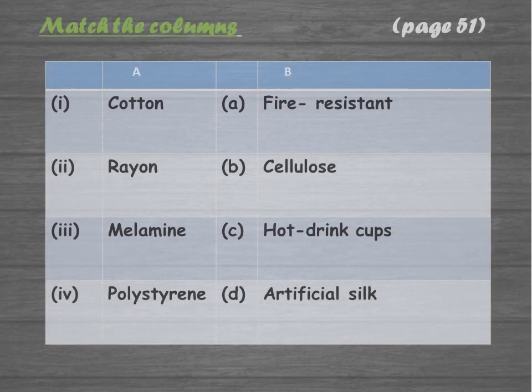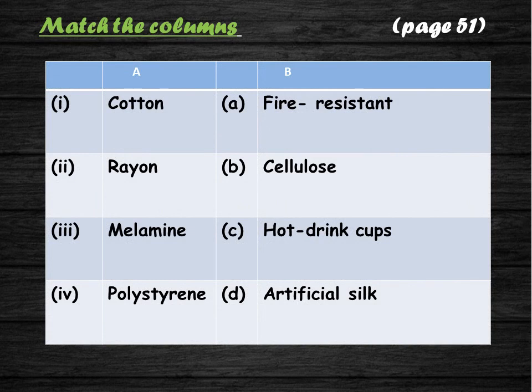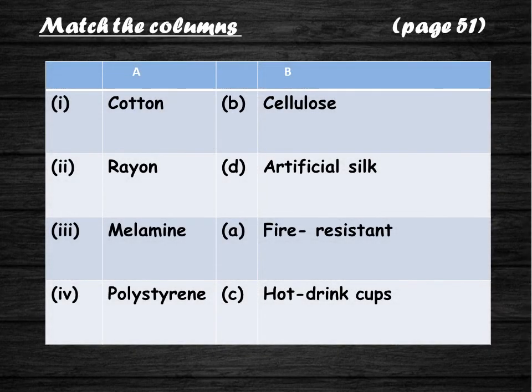Let us continue with another exercise — match the columns. Match the options given in column A with the correct options given in column B. The correct answers: cotton is made up of a polymer called cellulose; rayon is also called artificial silk; melamine is a fire-resistant plastic; polystyrene is used to make hot drink cups.